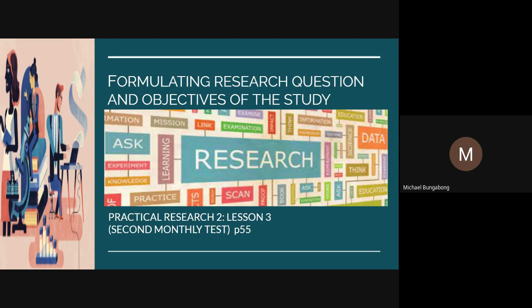After you have created or written your research title and narrowed down your topic, searching and reviewing existing literature may further clarify your research approach. Moreover, by identifying the conclusions of previous research that are unclear or where gaps may exist in the literature, you will be better prepared to write good research questions.